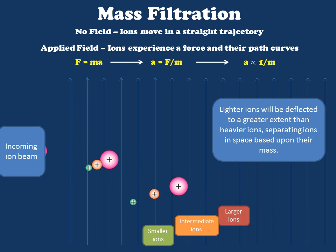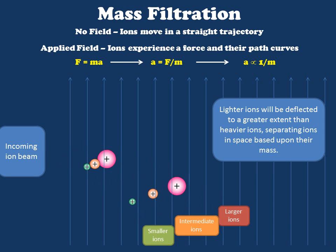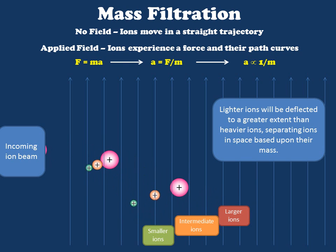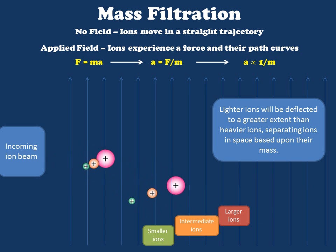As you can see in this example, the smaller green-colored ions are moving with a greater degree of curvature, meaning they reach the bottom of the screen at a location closer to the source. Now that we have separated our ions in space, we need to detect exactly where they have gone so that we can back-calculate their masses.